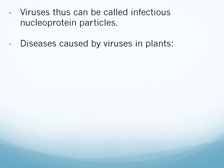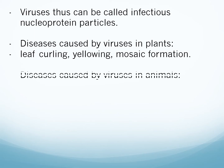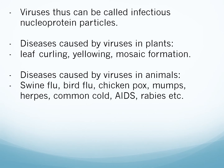Diseases caused by viruses in plants include leaf curling, yellowing of leaves, and mosaic formation — mosaic formation means there is a formation of light and dark green or yellow mosaic pattern on leaves. Diseases caused by viruses in animals include swine flu, bird flu, chickenpox, mumps, herpes, common cold, AIDS, and rabies.